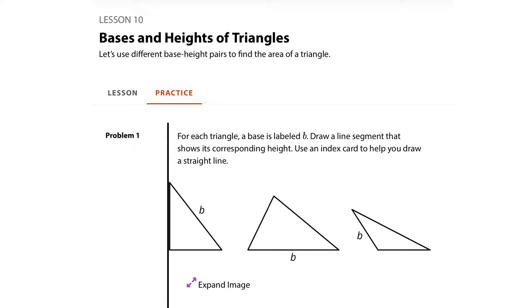In Problem 1, for each triangle a base is labeled B. Let's look at those bases real quick here. We have this base here, this base here, and this base here.